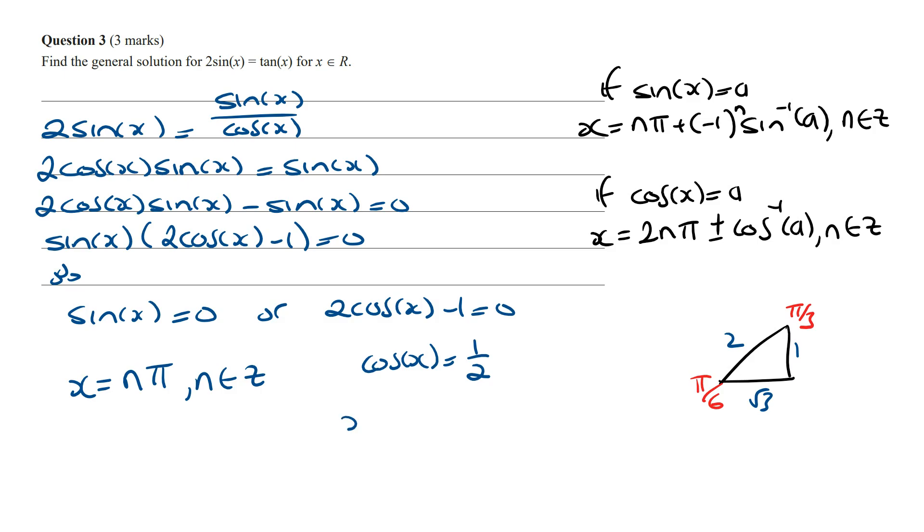And so the general solution is going to be x is equal to 2n pi and we can write this as plus or minus cos inverse of a half. And so this is going to equal 2n pi plus or minus pi on 3 where n is an integer. And that's it for this question.